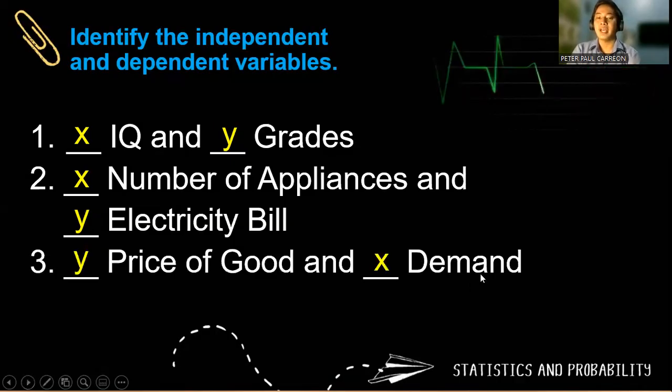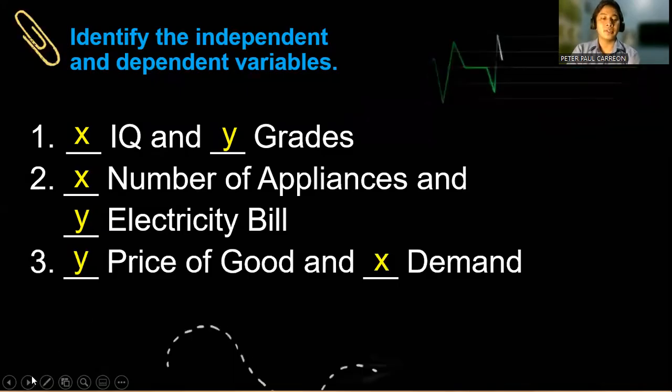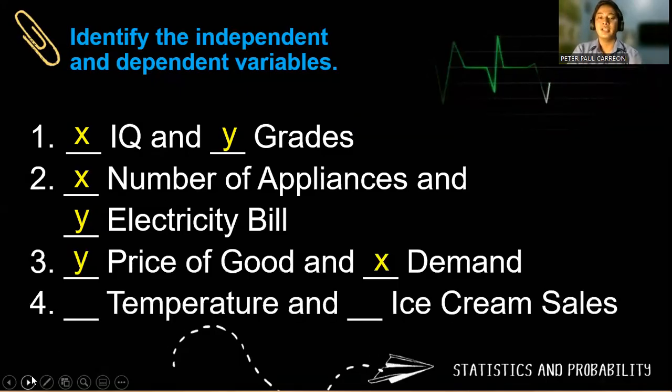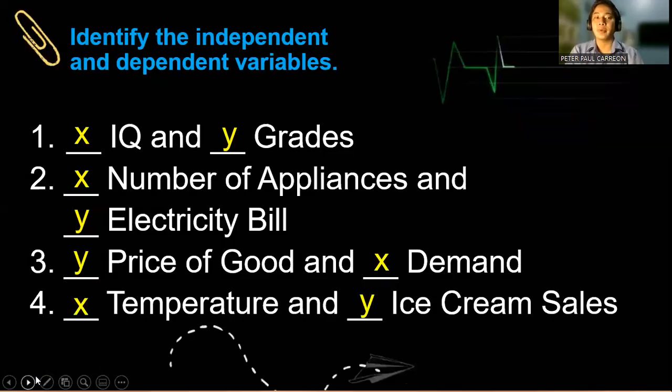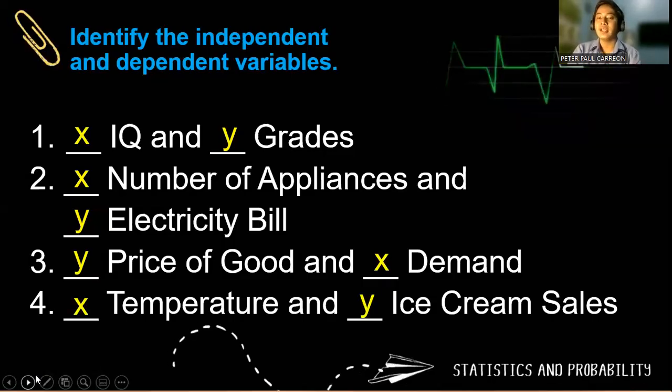Number three, so the demand is our independent, while the price of goods is the dependent variable. And lastly, number four, temperature and ice cream sales. Correct. Temperature is our independent, x, and ice cream sales is our y value.